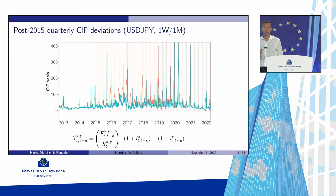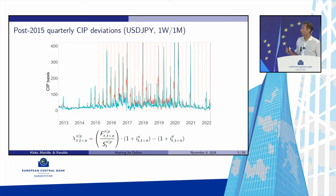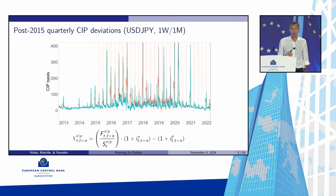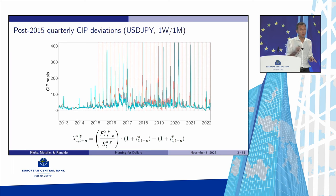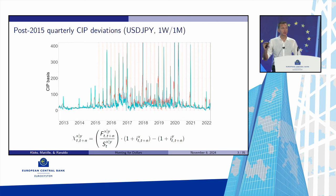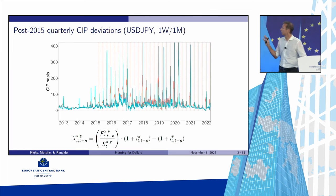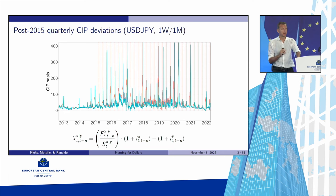Let me share some visual evidence about this mispricing. Ever since the global financial crisis we've been seeing the following pattern. On the vertical axis is the deviation from covered interest rate parity, and the horizontal axis is time from 2012 onward. There are at least three interesting patterns: first, there is a systematic CIP violation averaging about 30 basis points; second, there are deterministic seasonal patterns — when we approach quarter-end, there is a spike in the basis; and third, the shorter maturity of one week spikes much more than the one-month maturity when entering the last week of the quarter.